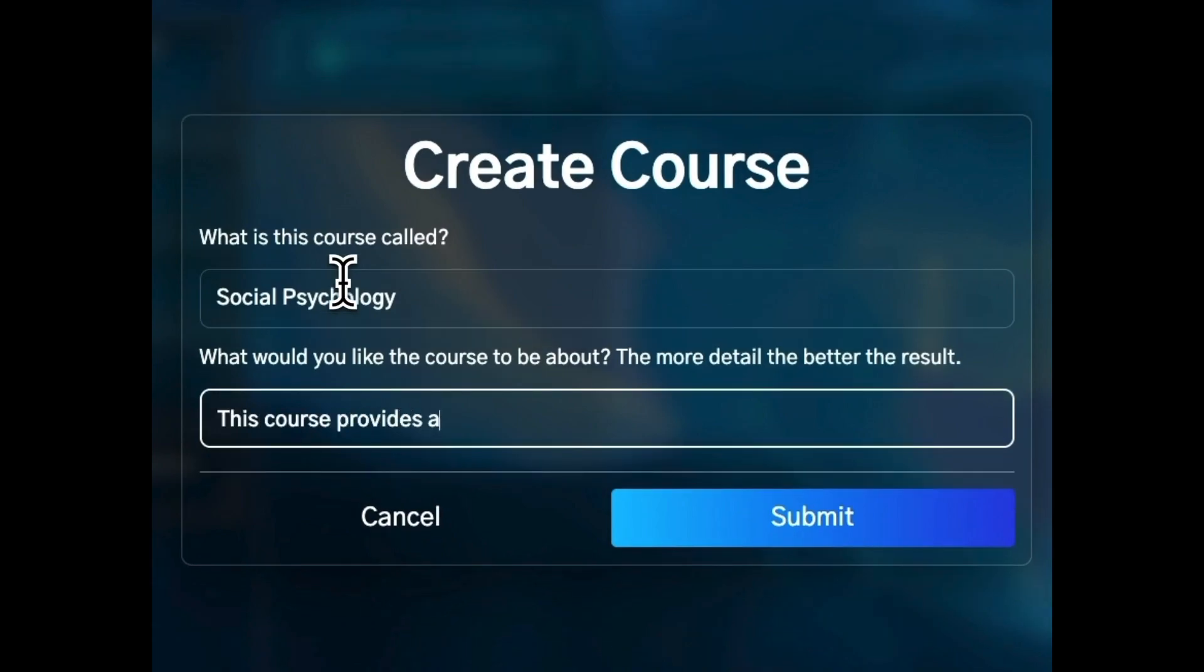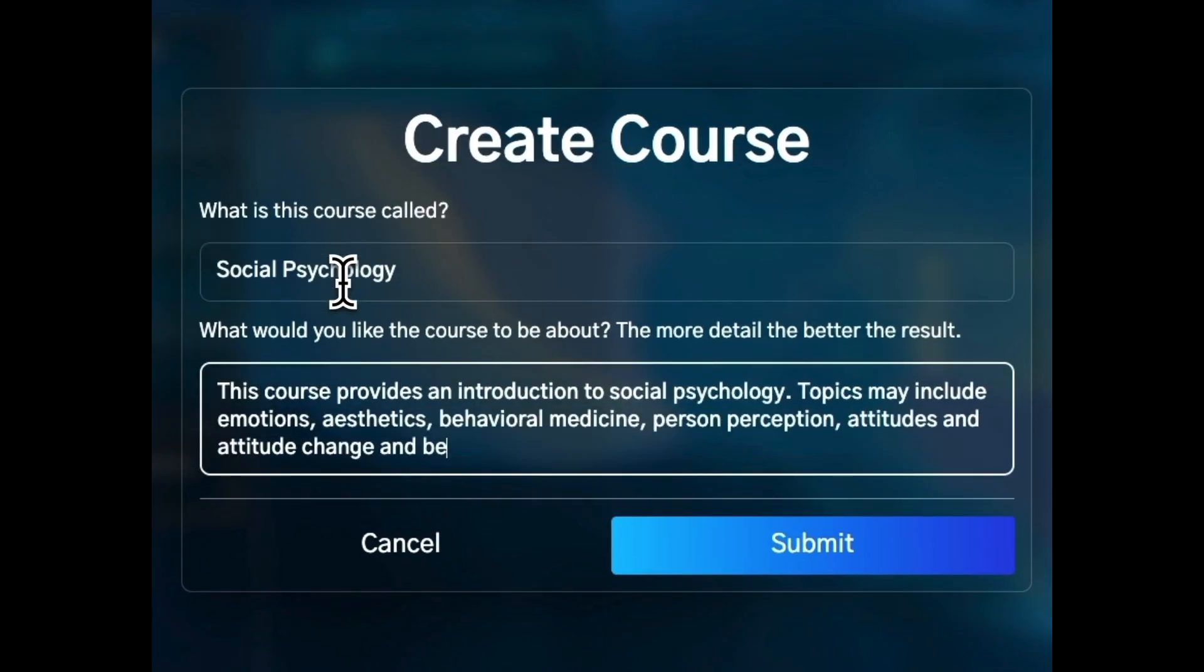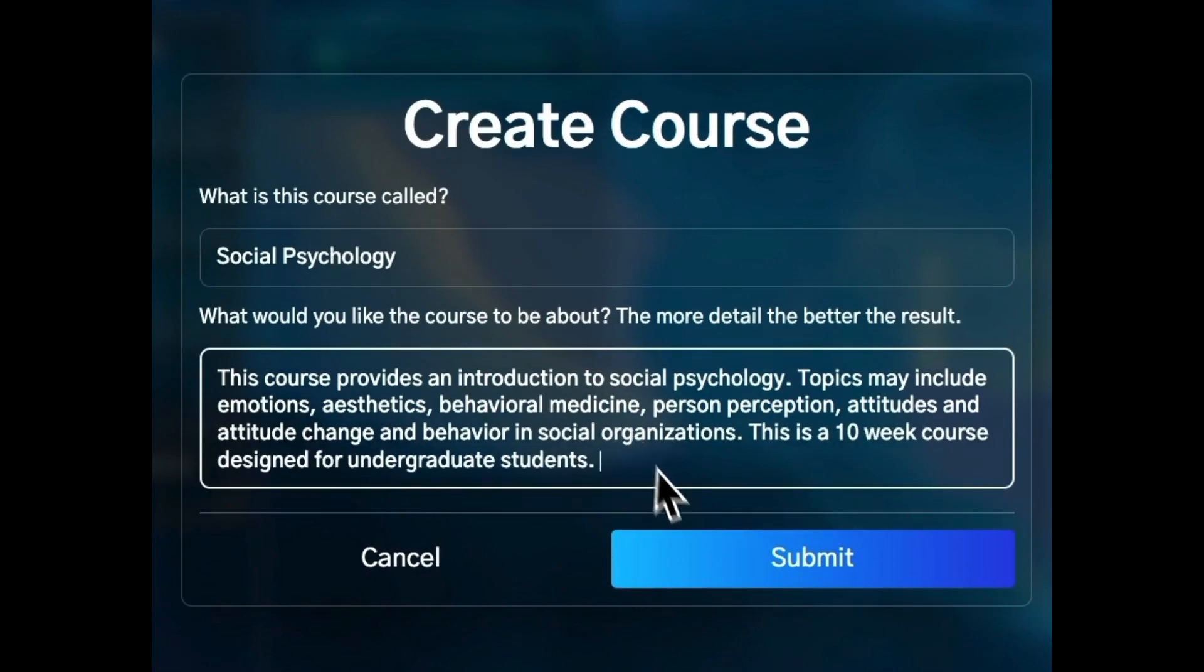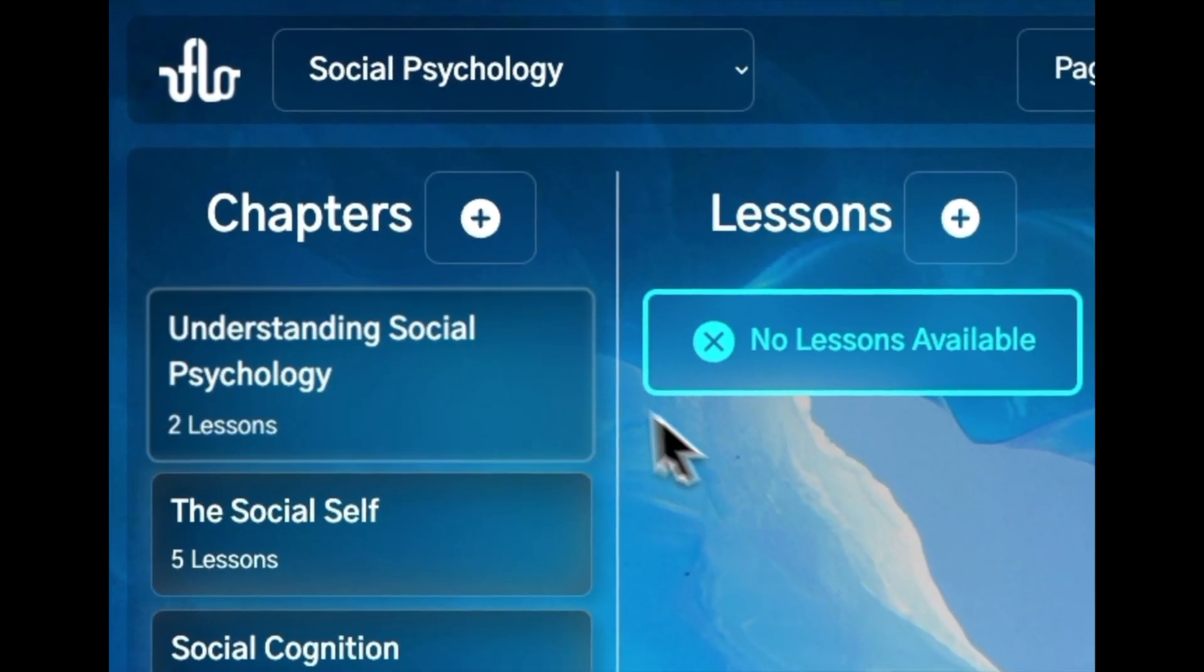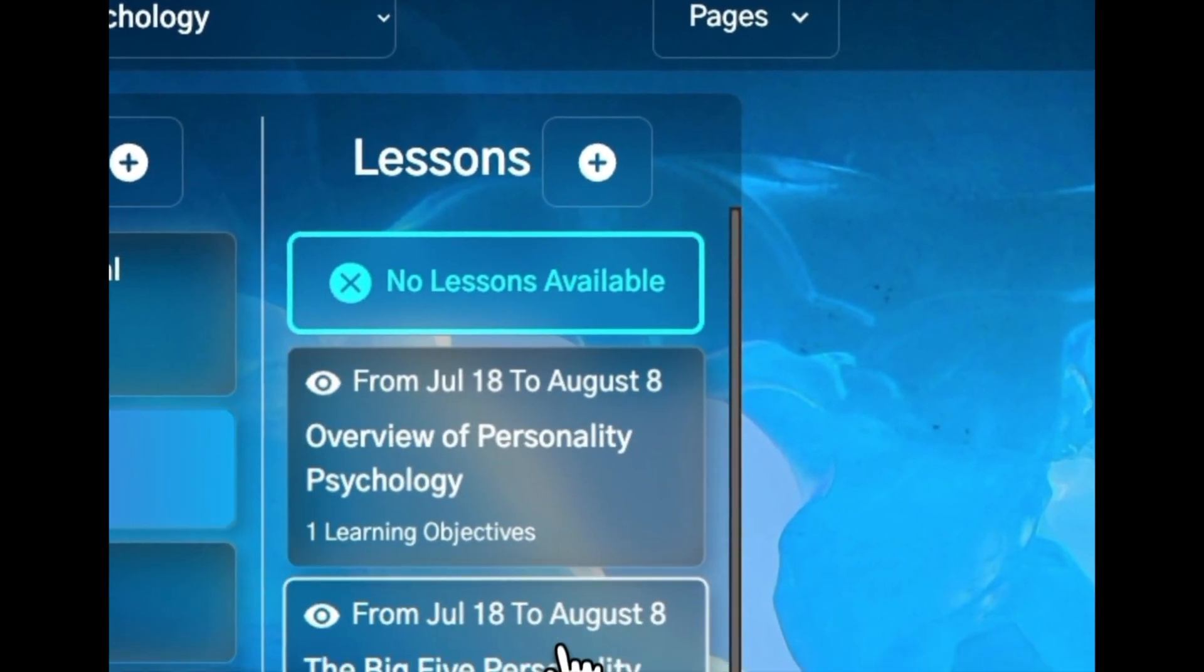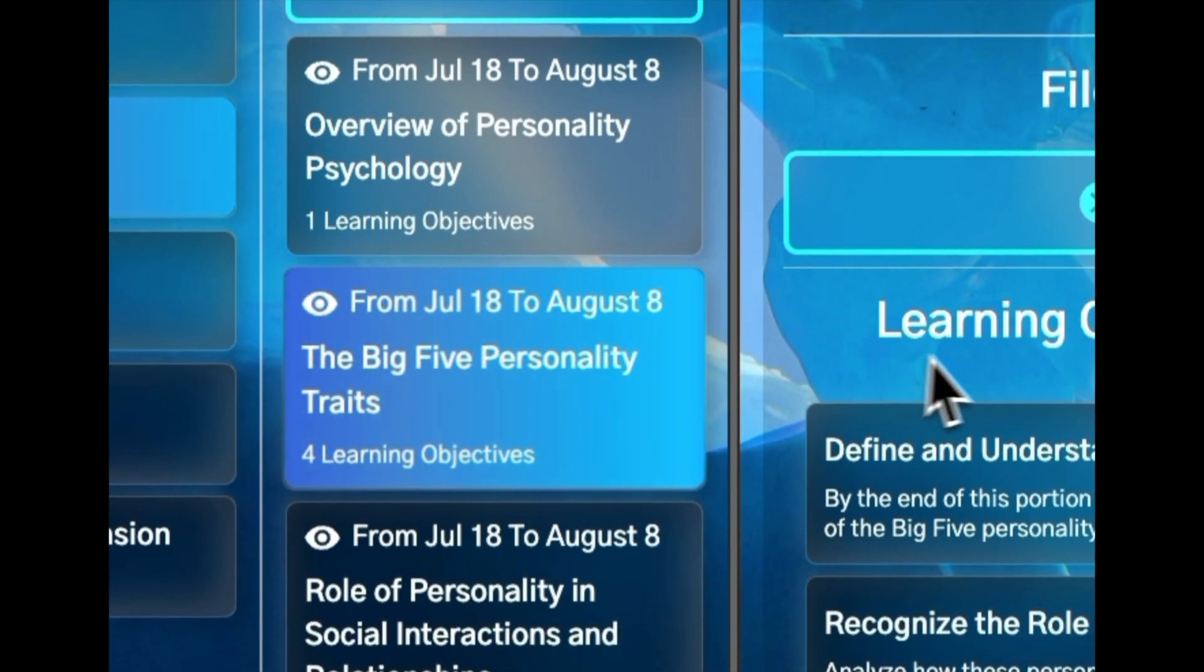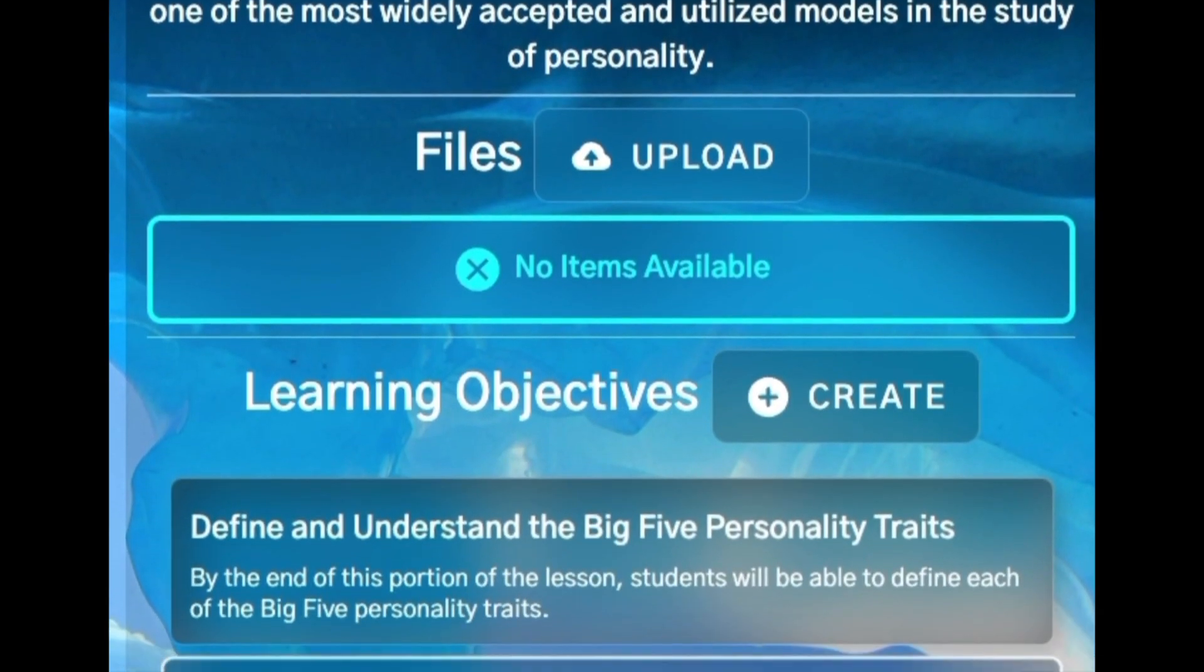Creating a course is simple. The instructor or learner uploads content manually or leverages ChatGPT, inputs a course title and description, and the flow agent generates a custom course with chapters, lessons, and learning objectives.